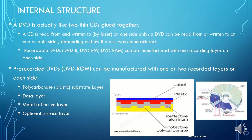DVD is actually like two thin CDs glued together. A CD is read from or written to by laser on one side only, while a DVD can be read from or written to on one or both sides depending on how the disc was manufactured. DVD-R and DVD-RAM can be manufactured with one recording layer on each side, while DVD-ROM can have one or two recording layers on each side.